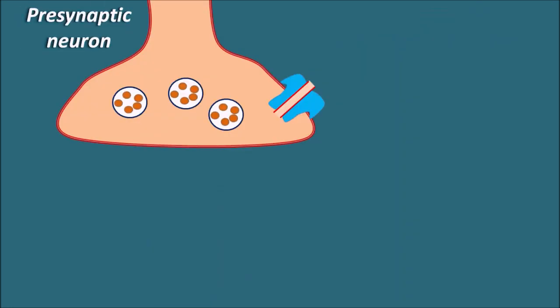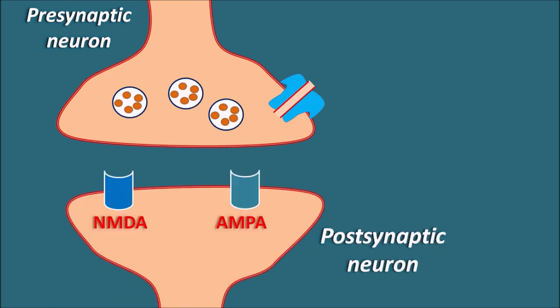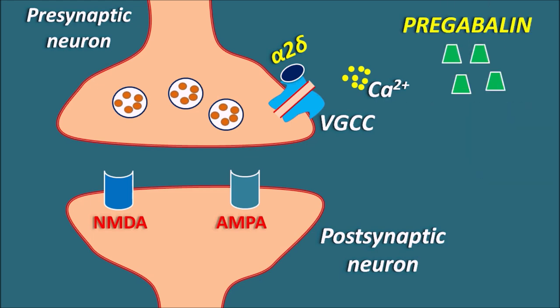Now let us see how pregabalin acts. This is a presynaptic neuron and this is a postsynaptic neuron. Within the presynaptic neuron, voltage-gated calcium channels are important for release of neurotransmitters. These ion channels have a modulatory site called the alpha-2-delta site, which modulates the entry of calcium through the voltage-gated calcium channels. When we use pregabalin, it can bind to this alpha-2-delta site on the voltage-gated calcium channels and modulate these channels so that they become inactivated.